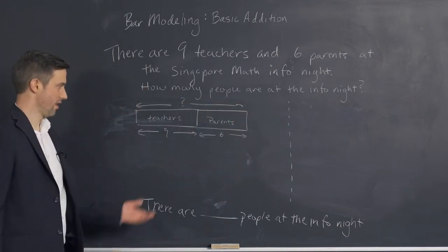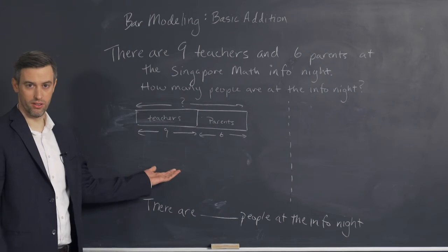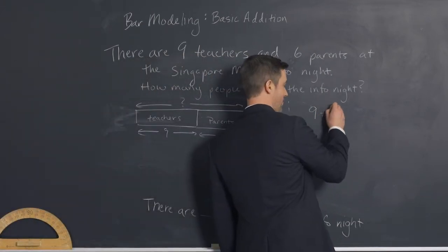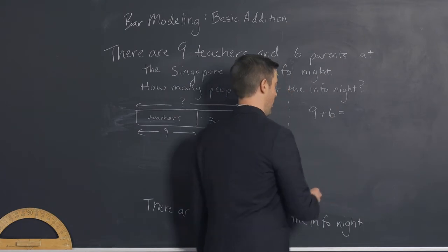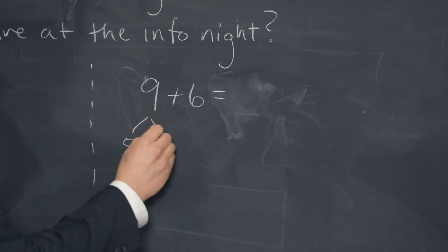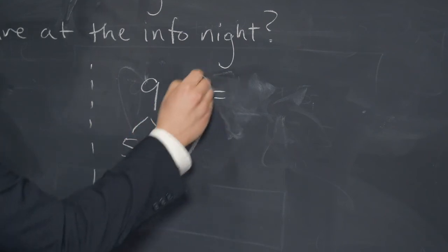And then my bar model is complete. So I will go over here and do nine plus six equals... Instead of separating the six, I could separate the nine into five and four, so that I make a ten here.